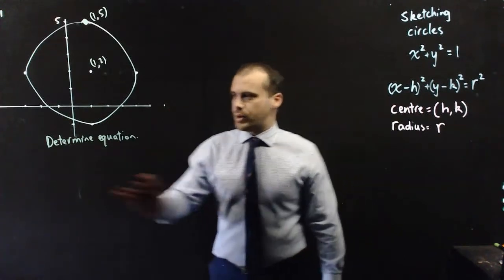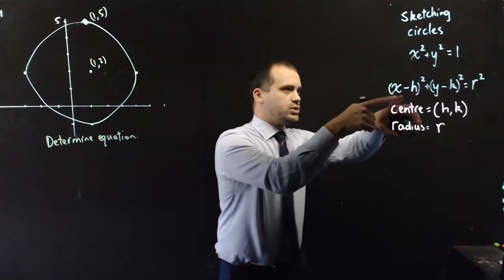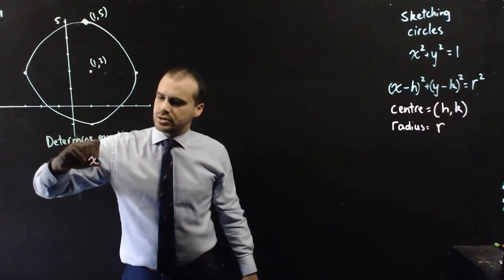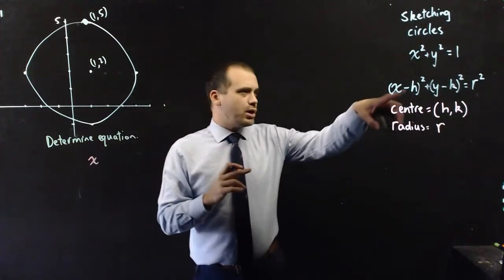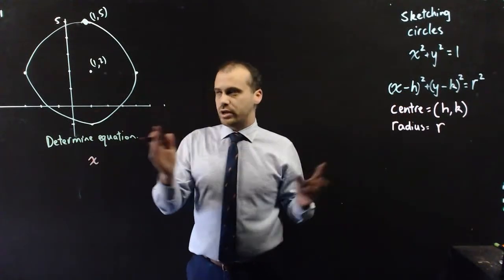Of course, you might get asked to go the other way, determine the equation of a circle that you see here. The important thing is just to note that you've got an equation, and you need to sub in your values. So, x and then this minus h. Now, that h determines how far left or right it's moved.